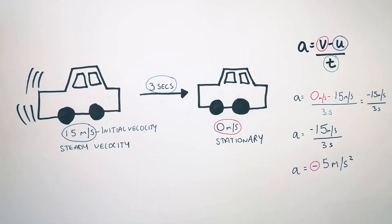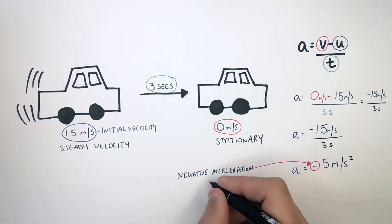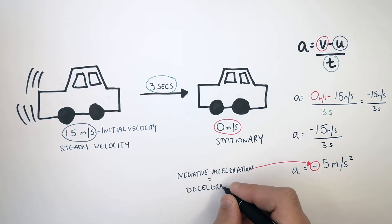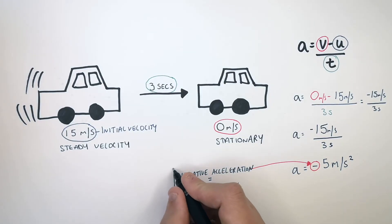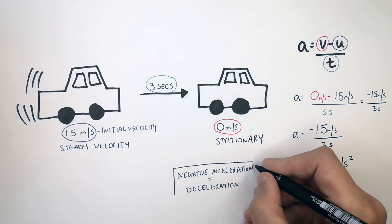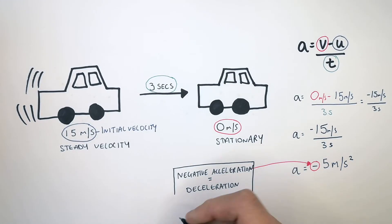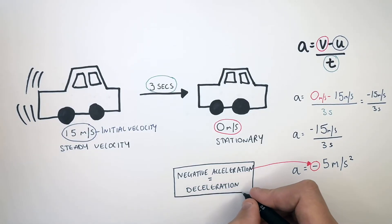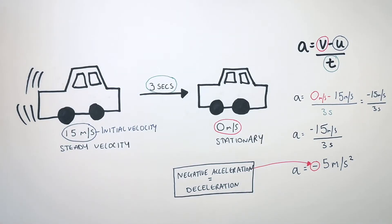A negative acceleration is deceleration. So if you've got a negative number for acceleration, the car is slowing down — it is decelerating.